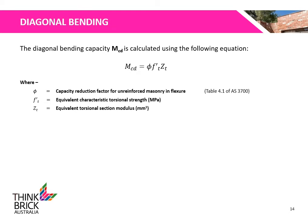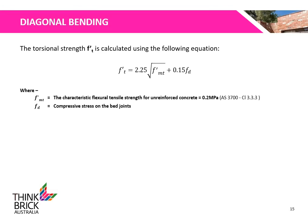The diagonal bending capacity MCD is calculated using the equation below, where phi is the capacity reduction factor for unreinforced masonry in flexure, FT is the equivalent characteristic torsional strength, and Zt is the equivalent torsional section modulus. The torsional strength FT is calculated using the equation below, where FMt is the characteristic flexural tensile strength of the masonry and Fd is the compressive stress on the bed joints.